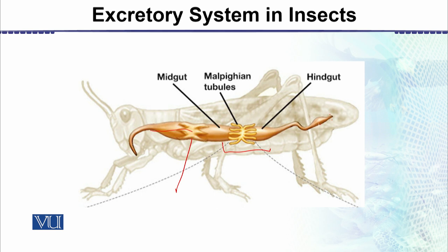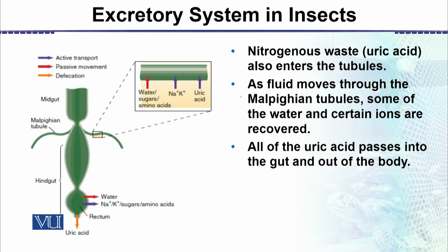Then there is the intestine, rectum, and finally the anus. So we can see that the Malpighian tubules, which form the excretory system, are connected with the digestive system. The nitrogenous waste in these animals — take a grasshopper for example — is managed carefully because the water supply available to them is very limited.